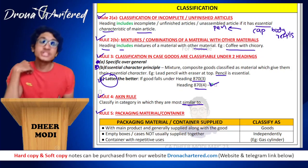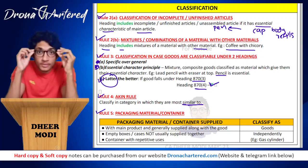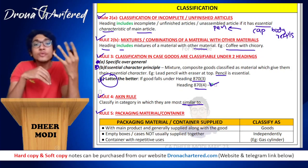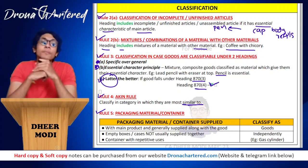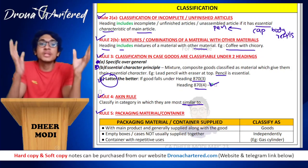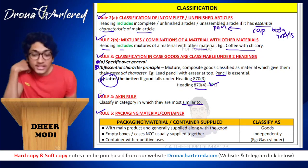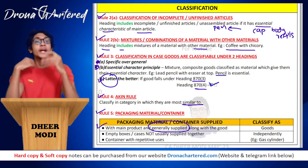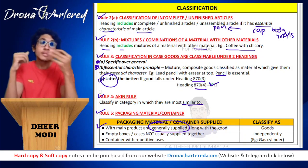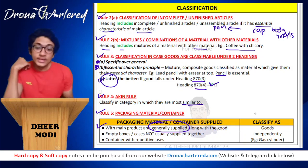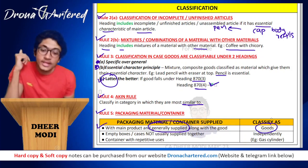The last rule deals with packaging material or containers. For example, when you import spectacles, they come with a case. You need to determine whether to classify that case along with the spectacles or as a separate category under plastic or packaging. If the packaging or container is generally supplied along with the main product, it will be classified under the same heading as the main good.